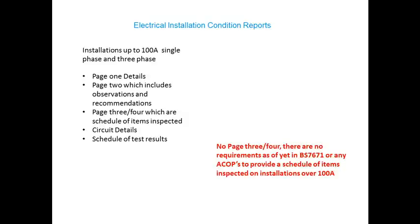The biggest change here is the inclusion of a two-page schedule of items inspected. These two-page tick sheets have caused a great deal of concern and confusion on how to implement these across installations above a hundred amps. On top of that, we've got site circuit details and a schedule of test results to be provided for every distribution board.